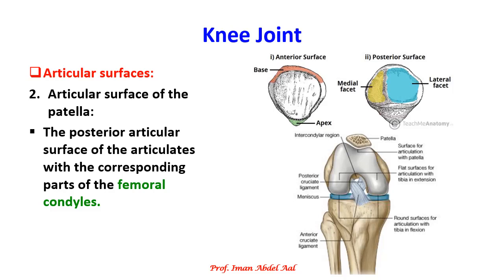The articular surface of the patella: on the posterior surface of the patella, we have an articular surface which articulates with the femoral condyles. So this posterior surface of the patella articulates with the front of the femoral condyles.